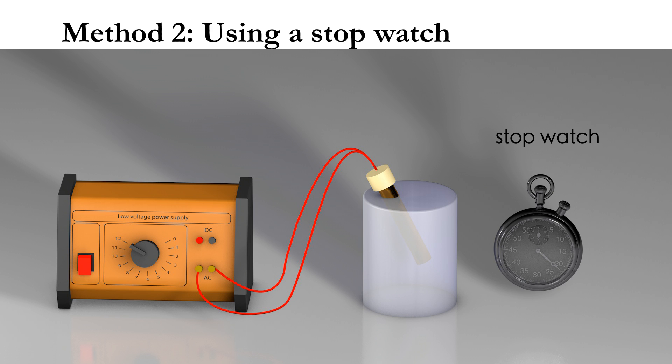Another method to measure the energy transfer experimentally is to use a stopwatch, which is used to measure the time interval in which the power supply is turned on. This requires knowing the power rating of the heater ahead of time.